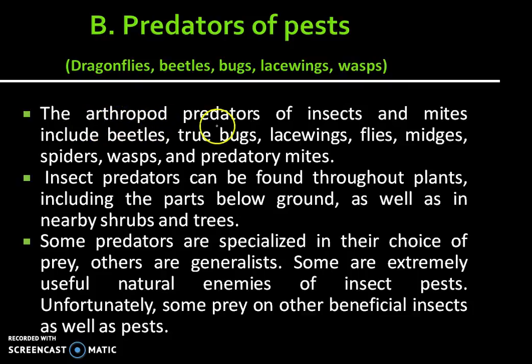The arthropod predators of insects and mites include beetles, true bugs, lacewings, flies, midges, spiders, wasps, and predatory mites. Insect predators can be found throughout plants, including parts below ground as well as in nearby shrubs and trees. Some predators are specialized in their choice of prey, while others are generalists. Some are extremely useful natural enemies of insect pests; unfortunately, some also prey on other beneficial insects as well as pests.